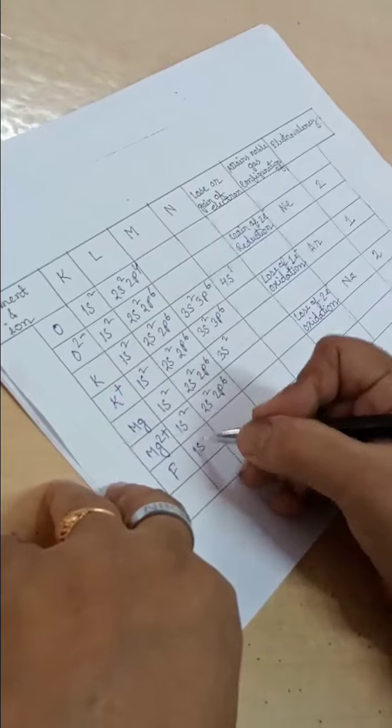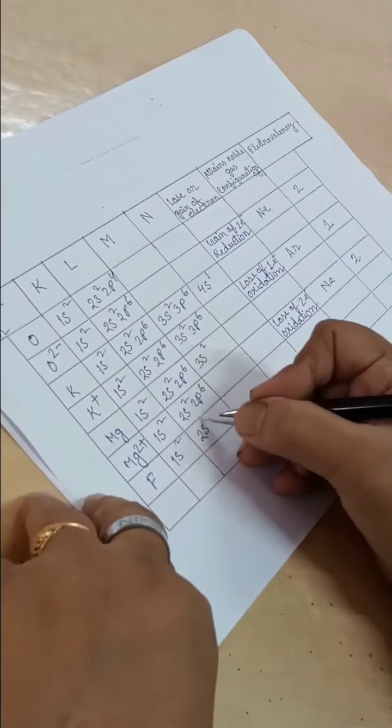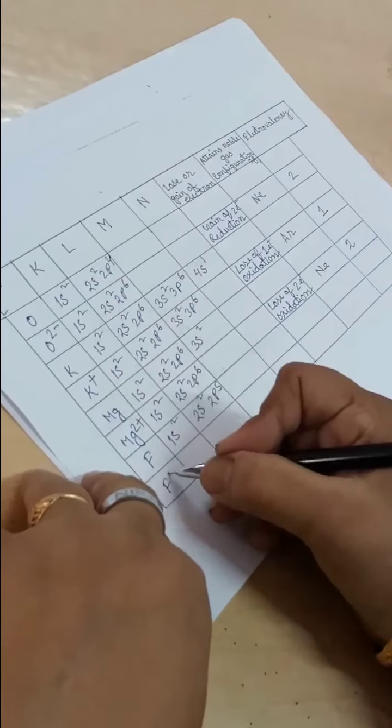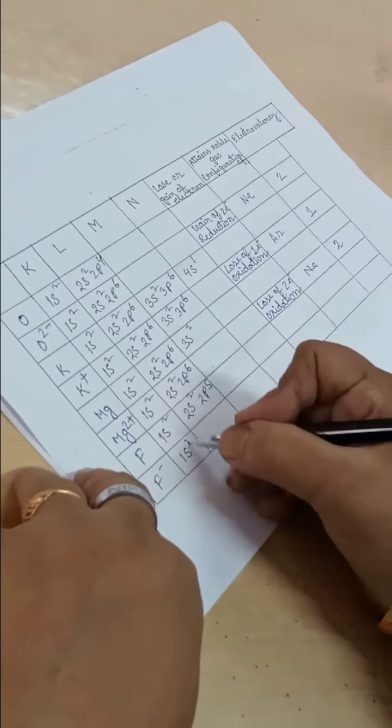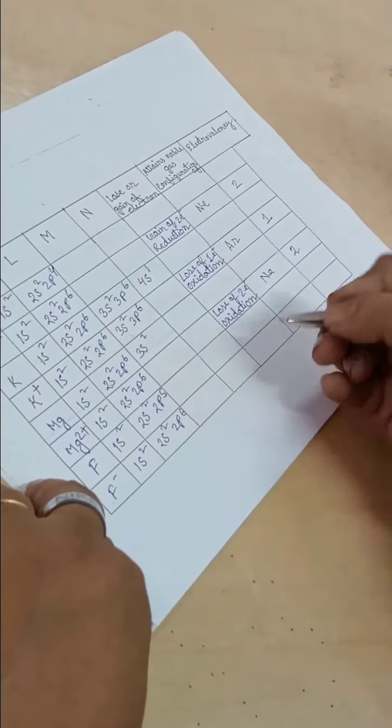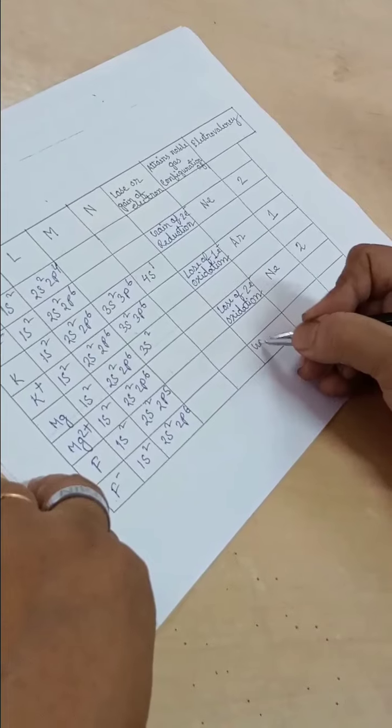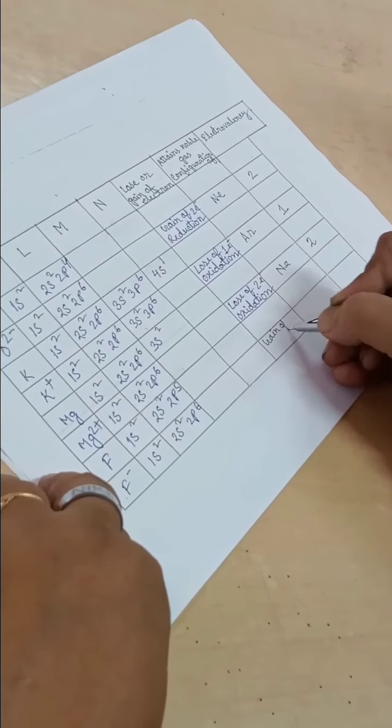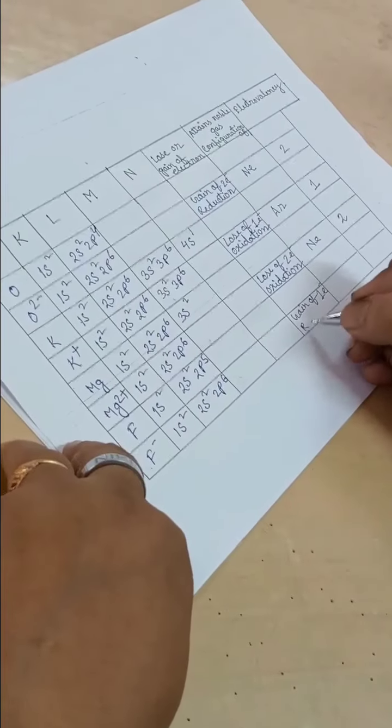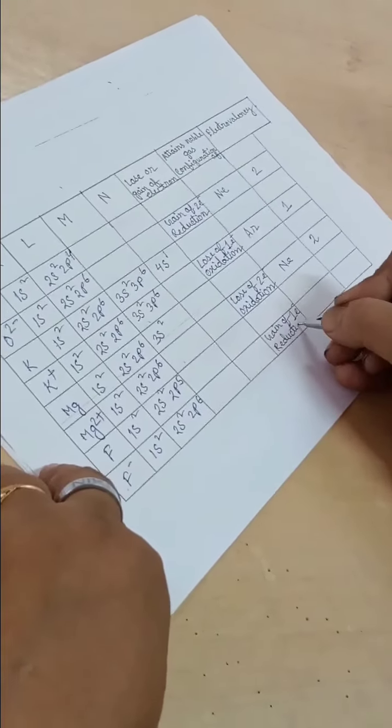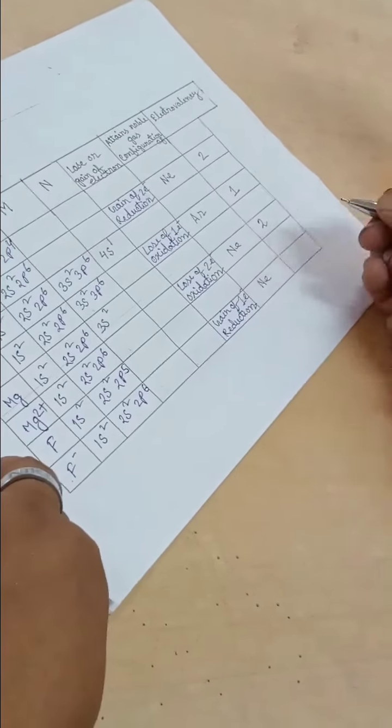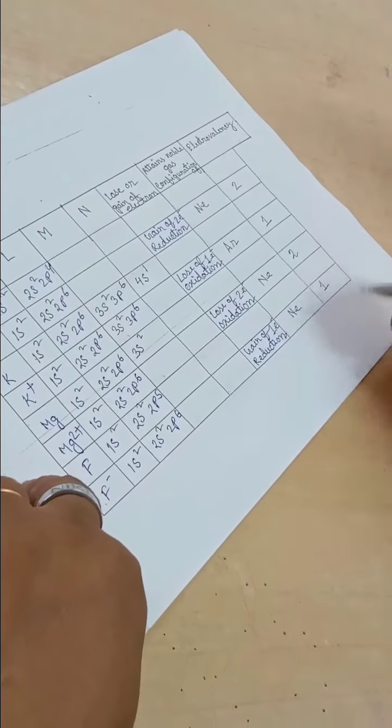Fluorine: 1s2, 2s2, 2p5. Fluorine-: 1s2, 2s2, 2p6. Gain of one electron, reduction, attains neon configuration, electrovalency 1.